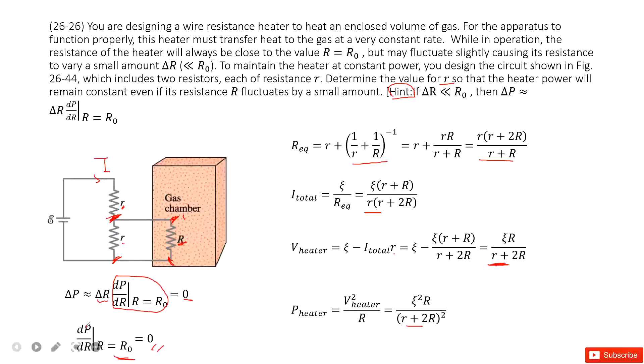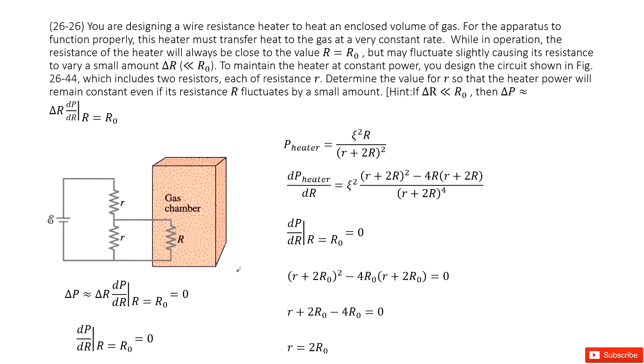We need to do the derivation for P with R to make sure that at R₀ it equals zero. So now you can see we do the derivation for the power heater with R. It looks like this one. When R equals R₀ equals zero, so that means this term can equal to zero when R equals R₀. And simplify it, we find the small r should equal 2 times R₀. Thank you.